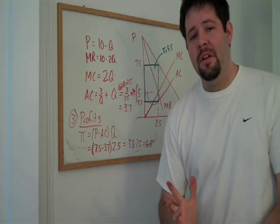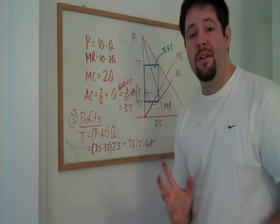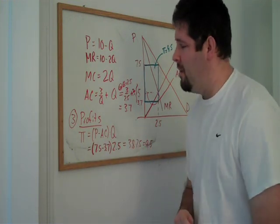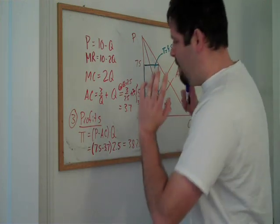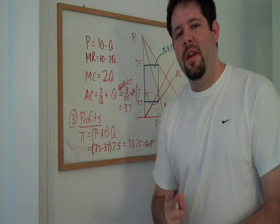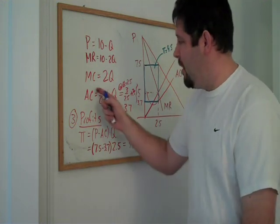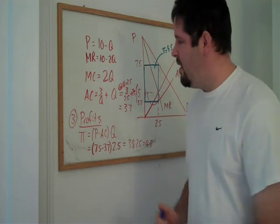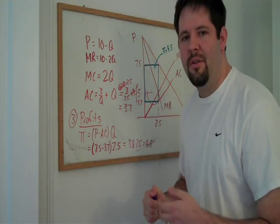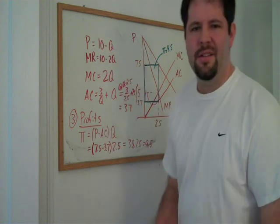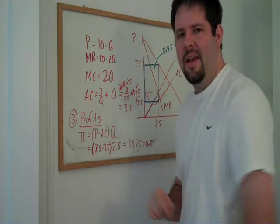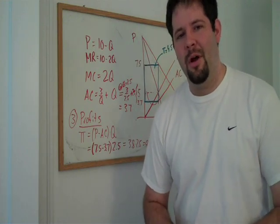There we have it. We have an example of how to compute all the different things that you would ever want to know about a monopoly. This gives you the basics of how do you solve a monopoly problem. If you're given a demand curve, marginal cost, and average cost, you can go ahead and use this method to solve any monopoly problem that could be dreamt up, just so long as our demand curve is a straight line. That's how you go ahead and work a monopoly problem. Thank you.